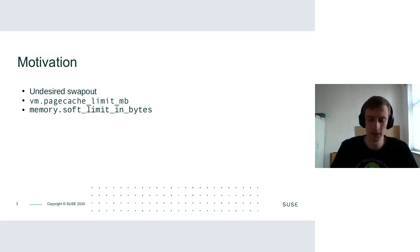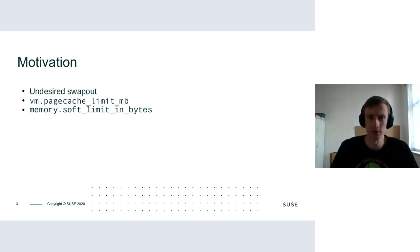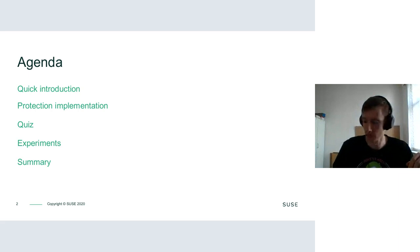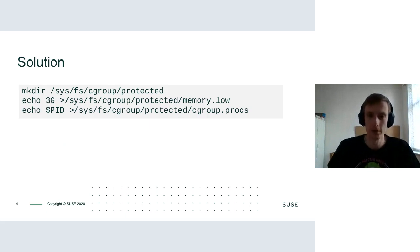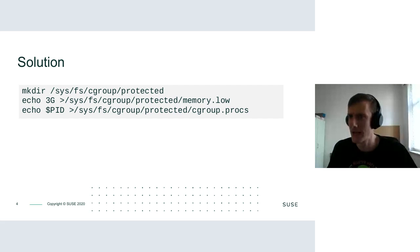That's why the current approach — the current iteration of efforts — is the protections. Another reason for protections is that it may be difficult to put everything that competes with your main workload into one cgroup, so you can just put your important workload into a cgroup and enable the protection on it.